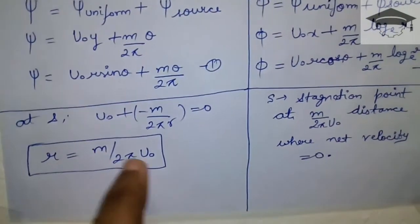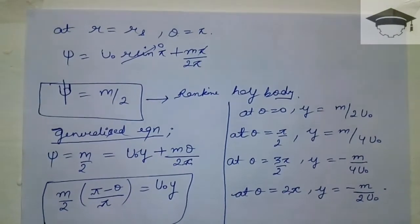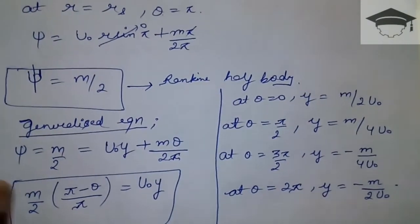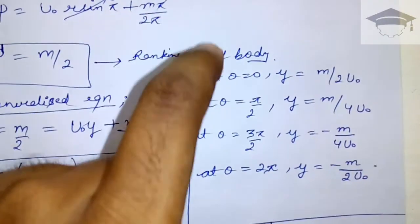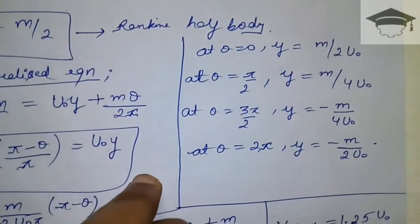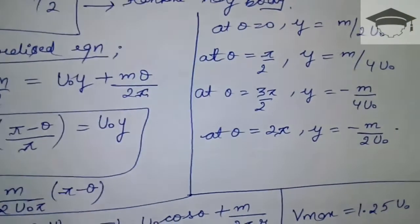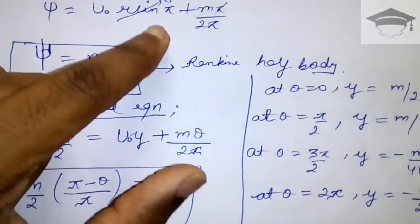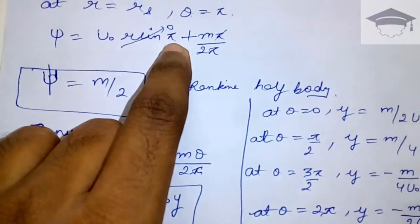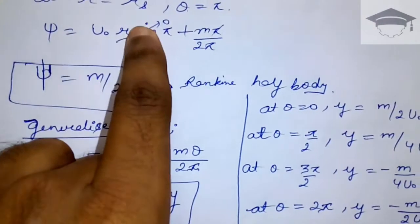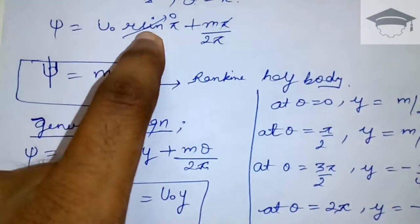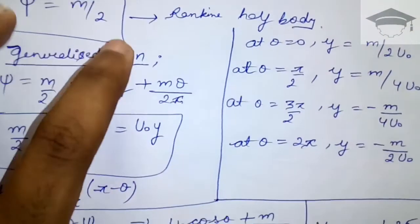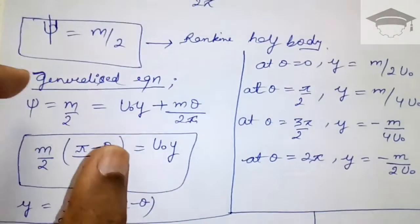When r equals rₛ (the radial distance at the stagnation point), θ equals π (180 degrees), because the stagnation point occurs there. Substituting into the ξ equation: ξ = u₀r sinθ + mθ/(2π). Since sin π = 0 and π/2π = 1/2, we get ξ = m/2. This streamline ξ = m/2 acts as the Rankine Half Body, and this is its main defining equation.